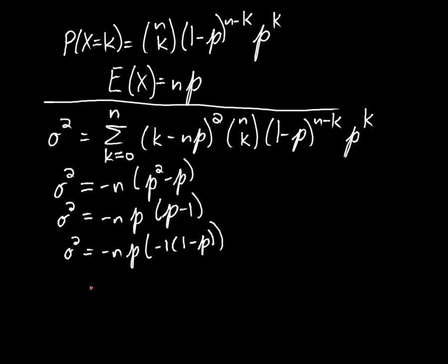Now the minus 1 and the negative side out front go together and give me a positive. And I have n times p times 1 minus p for the variance. And then the standard deviation is just the square root of that, the square root of np times 1 minus p.